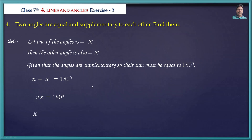So 2x is equal to 180 degrees. x is equal to 180 divided by 2. So x is equal to 90 degrees.